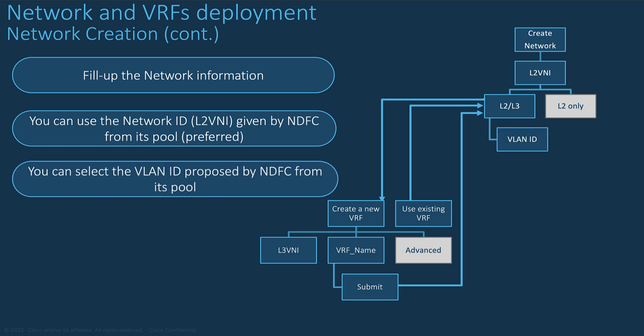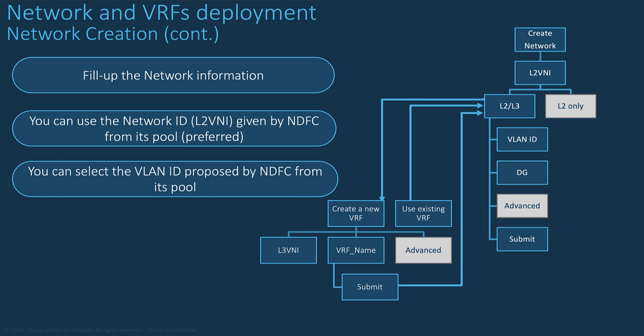For the VLAN ID, either enter your VLAN ID of choice or leave it blank and NDFC will fill up the identifier from its pool of VLAN IDs. Enter the default gateway for the VLAN — that is your Layer 3 Anycast gateway that will be deployed to all leaf nodes of interest. Optionally, you can also open the Advanced tab. Your network and VRF have been created.